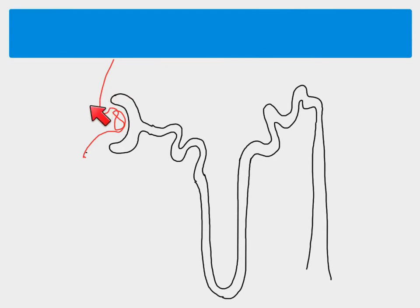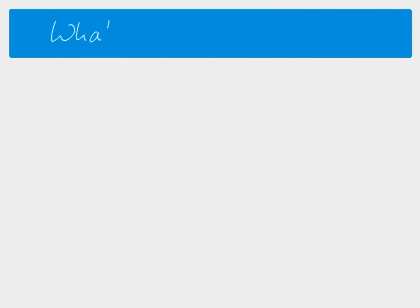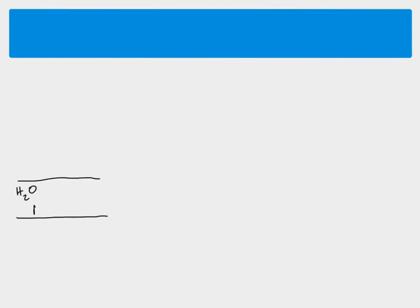So we're just looking at ultrafiltration, which is what's happening up here. So if we look at the arteriole coming in, we've got substances like water, salts, urea, and other substances — some of those substances need to be removed by the body.